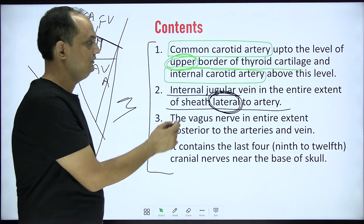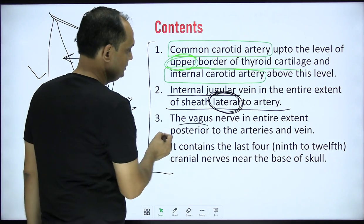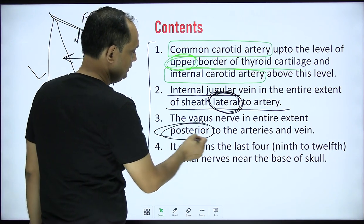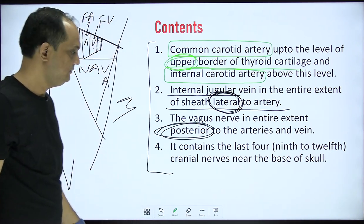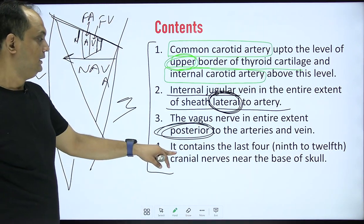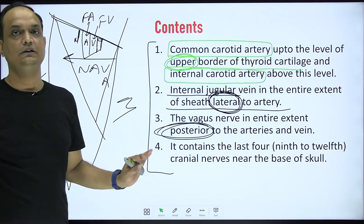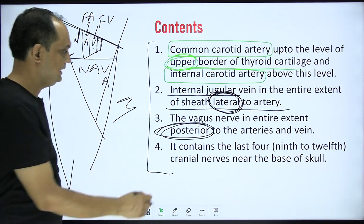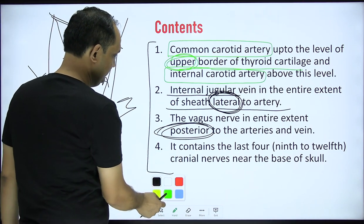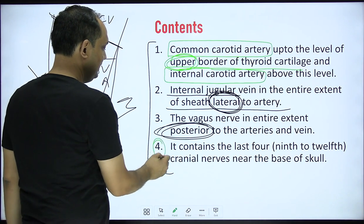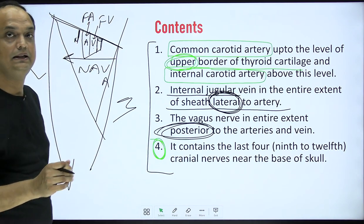The vagus nerve is present throughout the entire extent of the carotid sheath, but it lies posterior to the artery and vein.